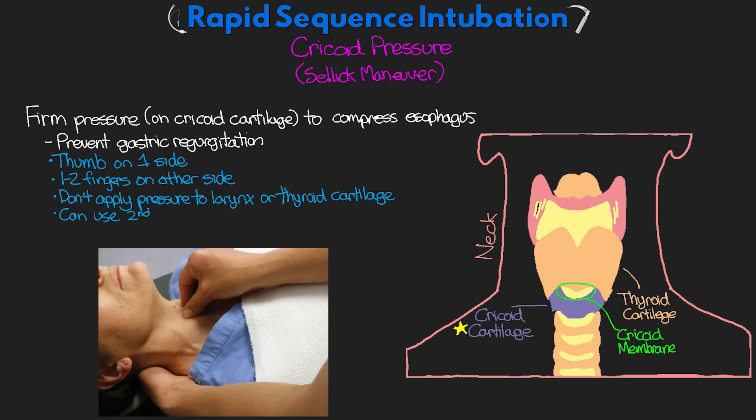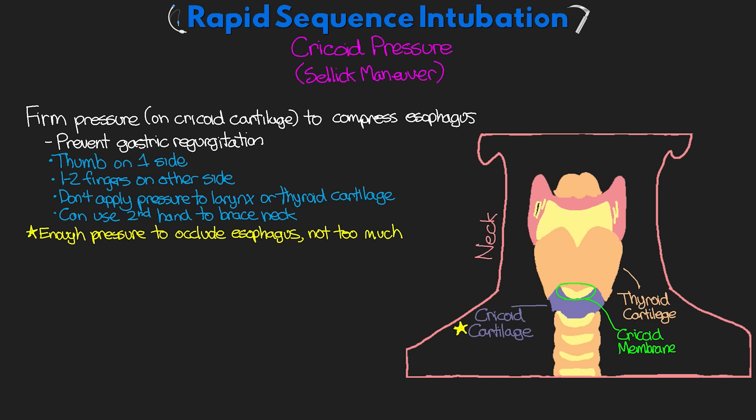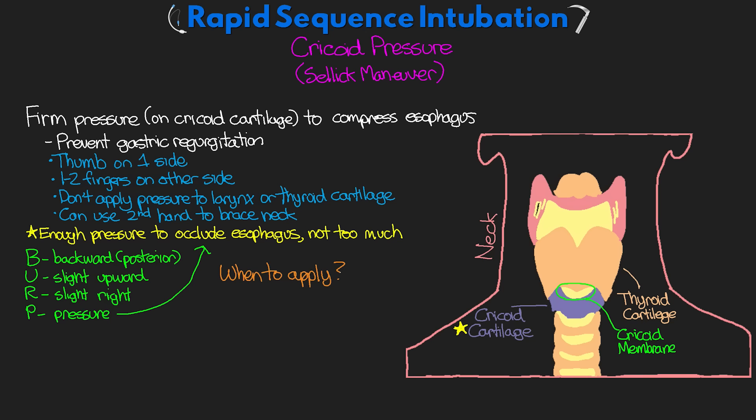You can also use a second hand to brace the back of the neck, though this isn't always necessary. It's important to have enough pressure to occlude the esophagus, but not too much, as that can actually hinder intubation — we may need to release some pressure if that's the case. There is an acronym to help with this technique called BURP: B stands for backward or posterior displacement; U stands for slight upward pressure; R stands for slight right displacement of the larynx; and P is pressure to occlude the esophagus.